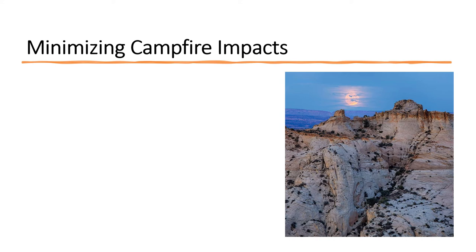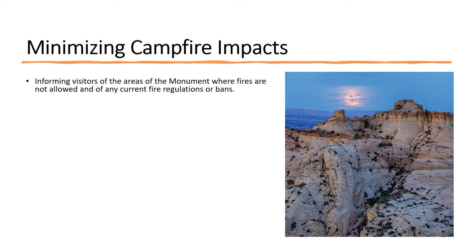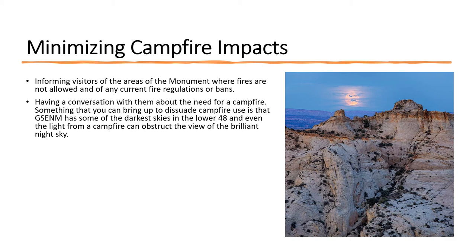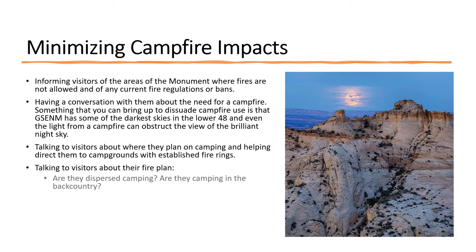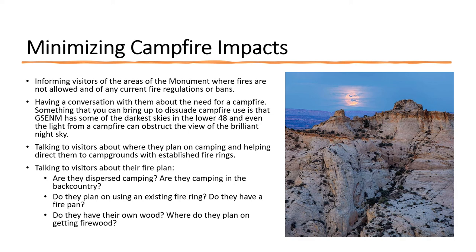As a trail ambassador, you can ask visitors if they are prepared to have a campfire in Grand Staircase-Escalante National Monument. You can talk with visitors about minimizing campfire impacts by informing them of areas where fires are not allowed and any current fire regulations or bans, having a conversation about the need for a campfire — noting that GSENM has one of the darkest skies in the lower 48 and even the light from a campfire can obstruct the view — and talking to visitors about where they plan on camping and helping direct them to campgrounds with established fire rings. Also talk to visitors about their fire plan: Are they dispersed camping or in the backcountry? Do they plan to use existing fire rings or have a fire pan? And do they have their own wood? We will provide trail ambassadors with teaching tools to help inform visitors about fire impact minimization topics.